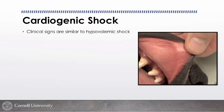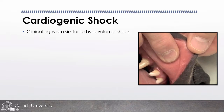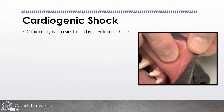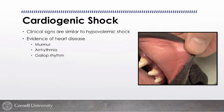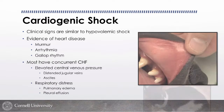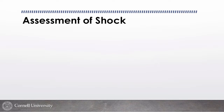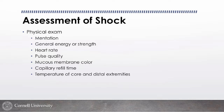Clinical signs of cardiogenic shock are more similar to hypovolemic shock — the circuit is working so they're vasoconstricted, cold, and pale, with a slow CRT. These patients will have evidence of heart disease: a murmur, arrhythmia, or in cats especially a gallop rhythm. Most will have concurrent heart failure and may be tachypneic with evidence of pleural effusion or pulmonary edema. In assessing whether a patient is in shock, we have a lot available from physical exam alone.